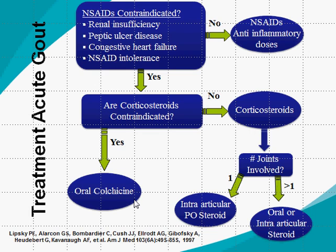To restate the algorithm: first-line is NSAIDs. If NSAIDs are contraindicated, use steroids — intra-articular if one joint is involved, oral steroids if more than one joint is involved. If both steroids and NSAIDs are contraindicated, then oral colchicine is appropriate. This is the treatment algorithm for acute gout.